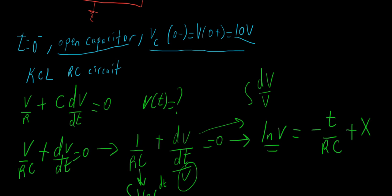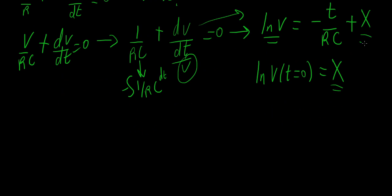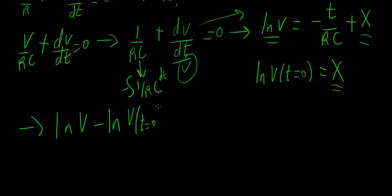Now that we have that constant, we know that at time T equals 0, the minus T/RC term goes to 0, leaving us with the constant X equal to ln(V₀). So we substitute back: ln(V) minus ln(V₀) equals minus T over RC. Using log properties, this becomes the natural logarithm of V over V₀ equals minus T over RC.